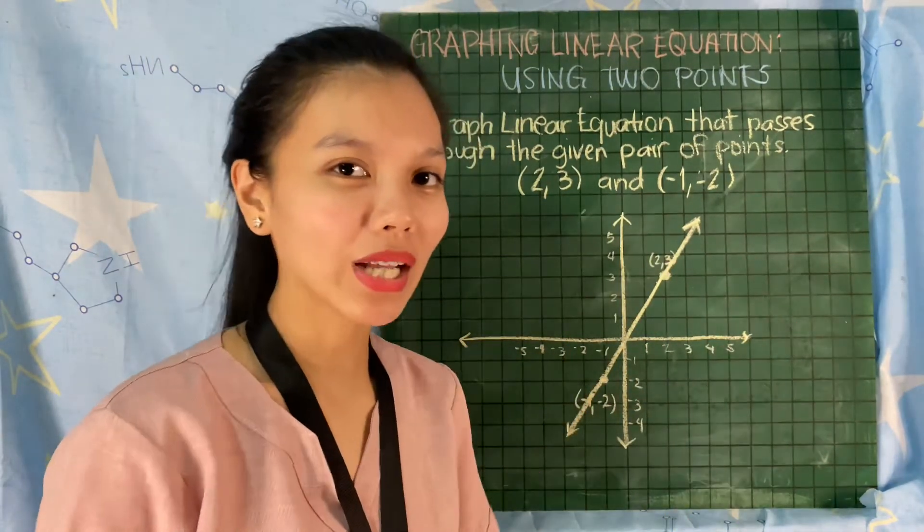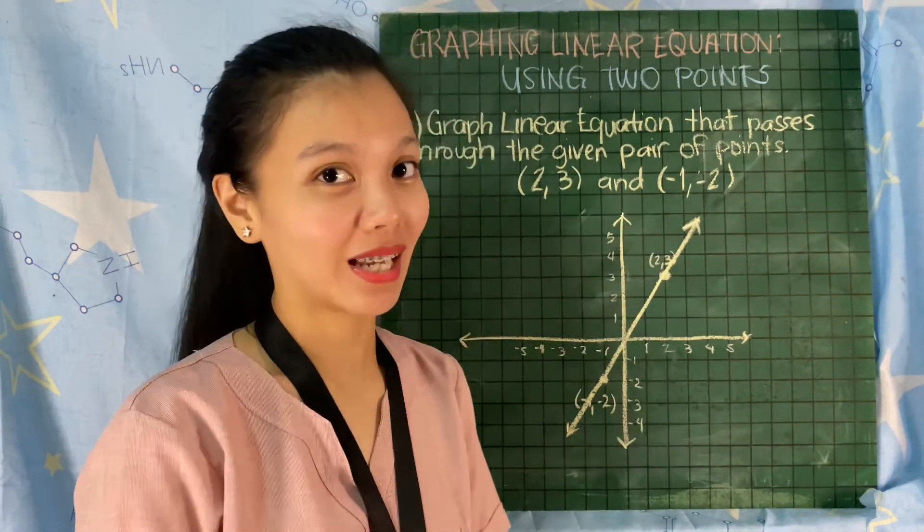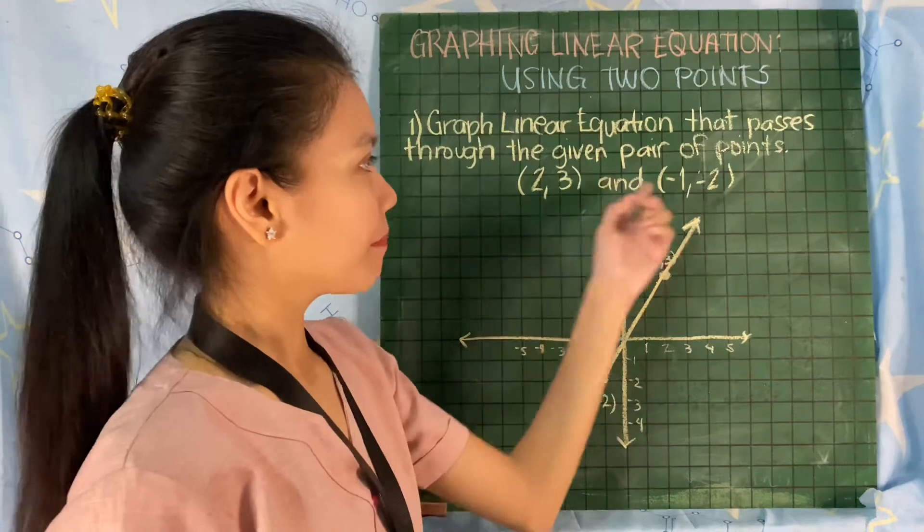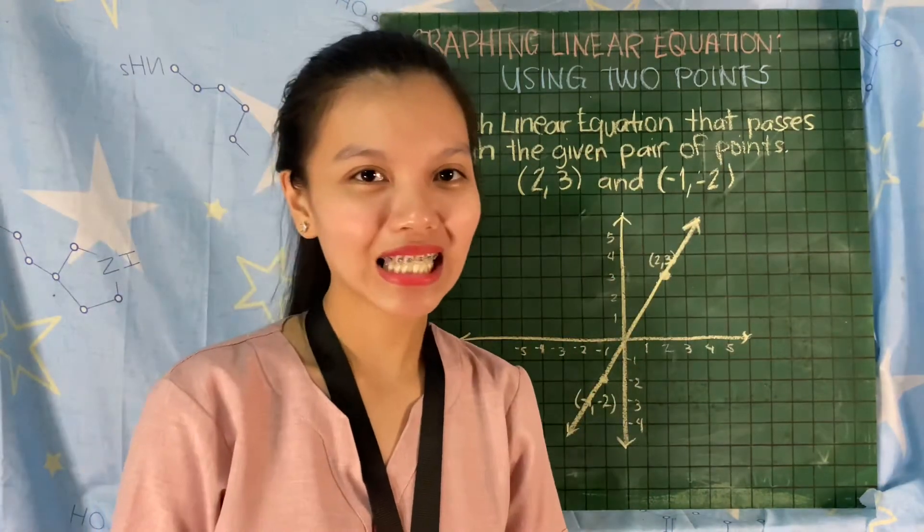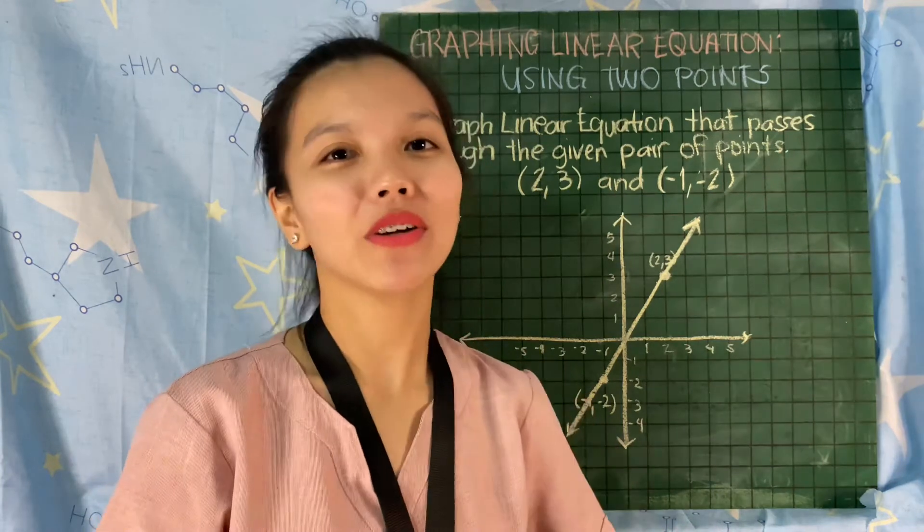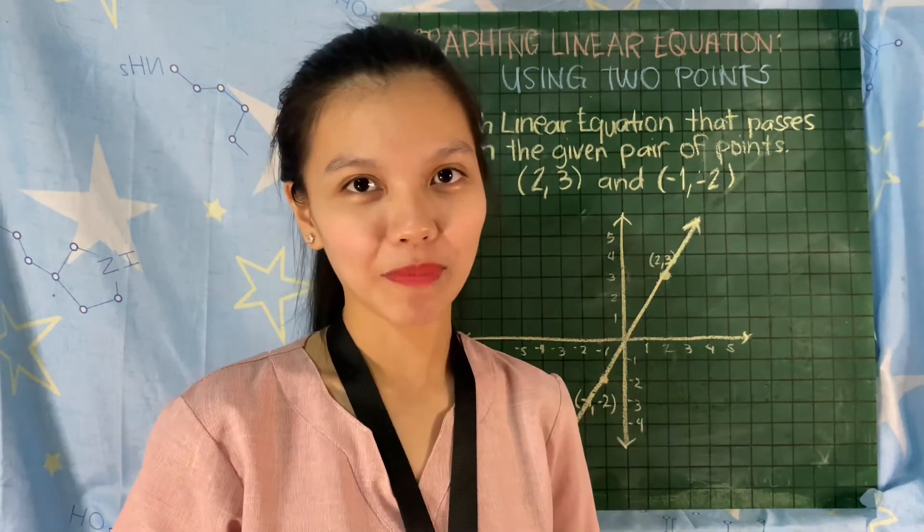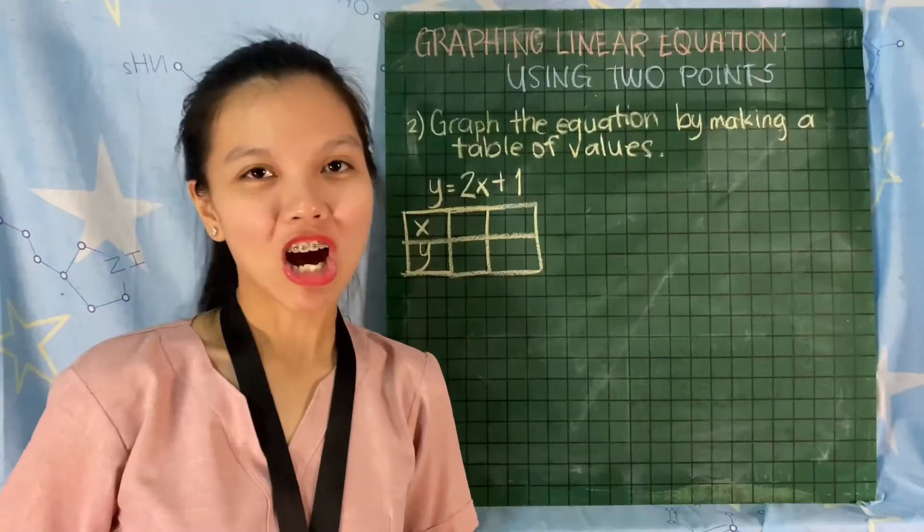From left to right, as you can see, it is going upward, so it rises. When you have two points, you can immediately make a graph of the linear equation. Always remember that the graph of a linear equation is a straight line.